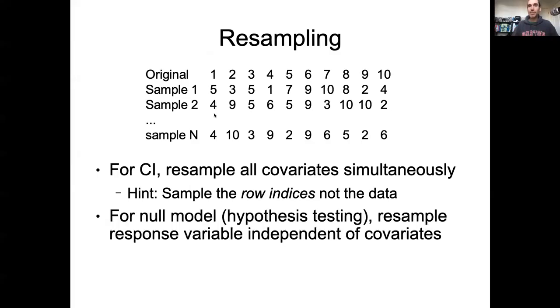By contrast, if I actually wanted to know whether the parameters I am getting are different than some null value, I would want to do a resampling that generates a null distribution. If I wanted to fit a null model, I might resample my x's and y's independently, and then ask the question, if I resample my x's and y's independently and fit the model, when there is no relationship, is the value that I observed different from that? If I wanted to do a bootstrapped p-value, I might do this kind of null model resampling. That said, for a lot of the rest of the class, we're going to focus on this normal version where we are resampling rows and trying to understand the uncertainties and the parameters themselves.